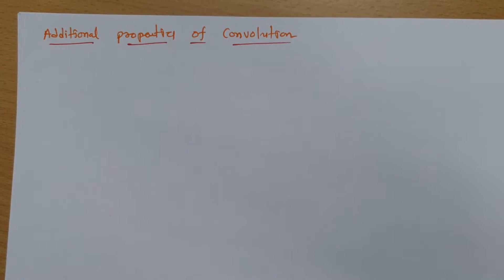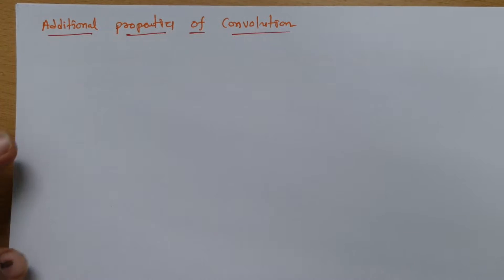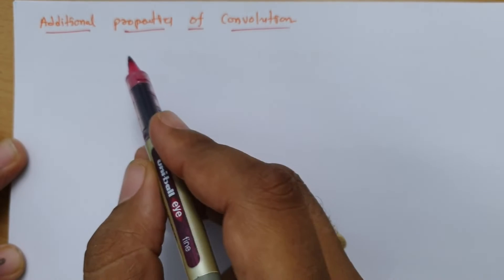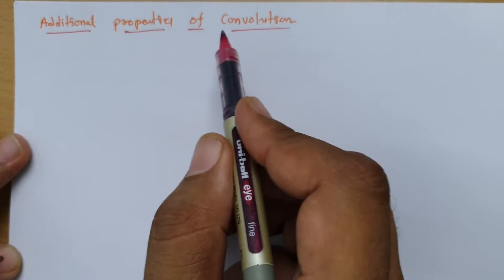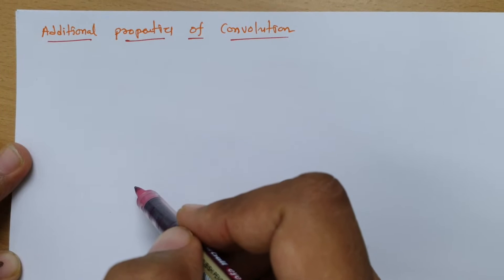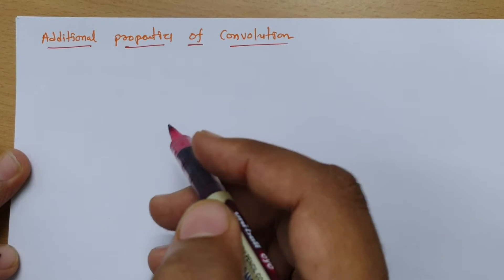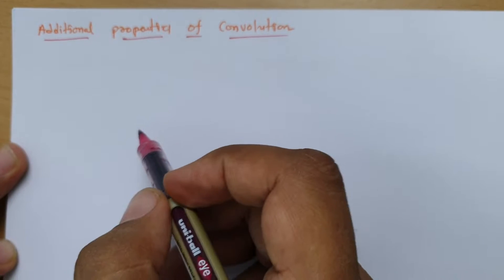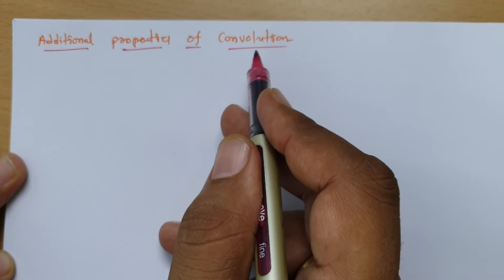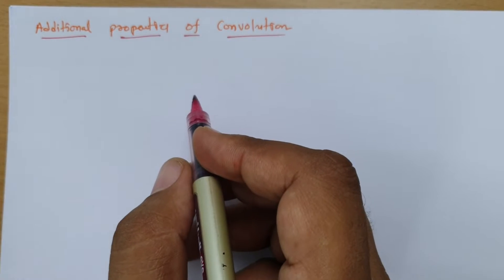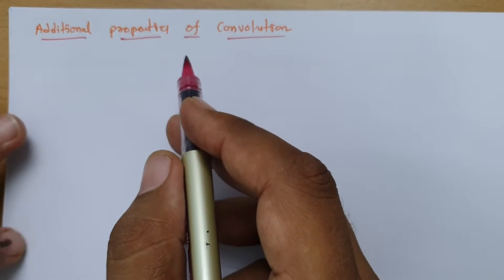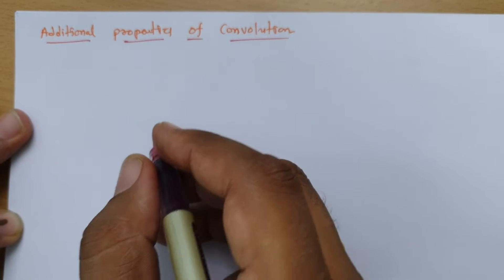Welcome to the Signal and Systems lecture series. In this session, I will be explaining a few more additional properties of convolution. In the previous session, I explained the basic properties regarding convolution, and in this session I will explain some additional properties.